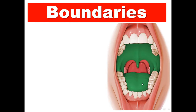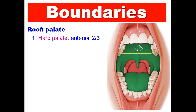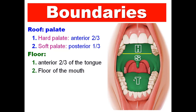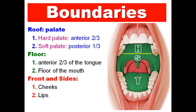Starting with the boundaries of the oral cavity. The roof is the palate, divided into hard palate — anterior two-thirds — and soft palate — posterior one third. The floor is the anterior two-thirds of the tongue and the floor of the mouth. Regarding the front and sides: cheeks and lips. And posteriorly, this is the oropharyngeal isthmus and the oropharynx.